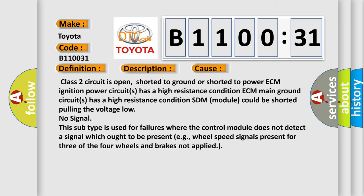Class two circuit is open, shorted to ground or shorted to power. ECM ignition power circuits has a high resistance condition. ECM main ground circuits has a high resistance condition. SDM module could be shorted pulling the voltage low. No signal.